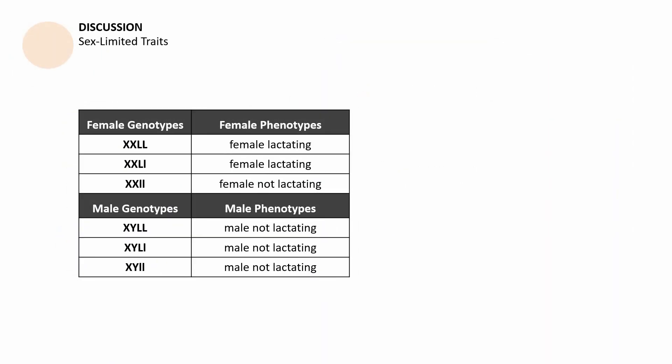In genetics, among the traits that are passed from parents to offspring, there are those that are only going to be expressed in one gender — it could be male or female — such as lactation. Those are sex-limited traits. Sex-limited traits are only expressed by one gender, but they can be transferred by both parents to their offspring, and both genders of offspring do have these traits.